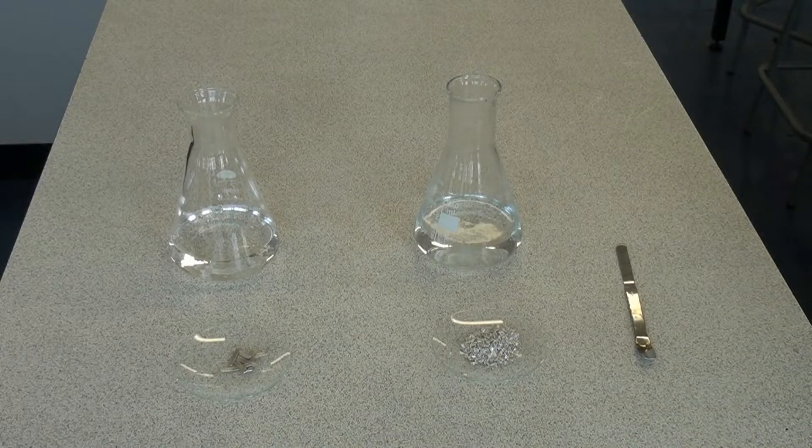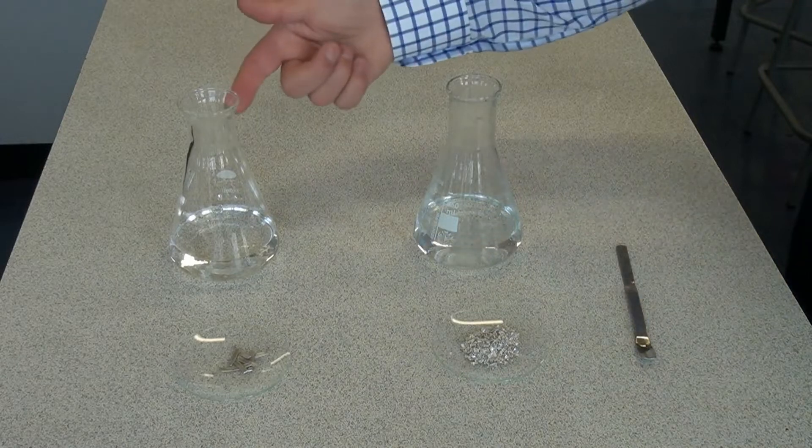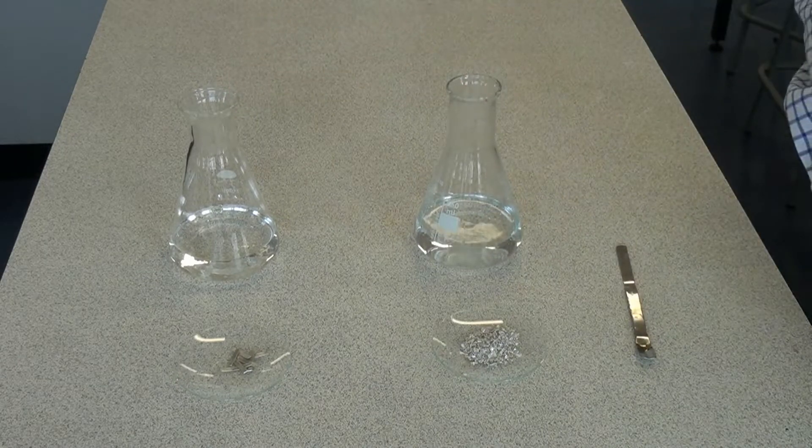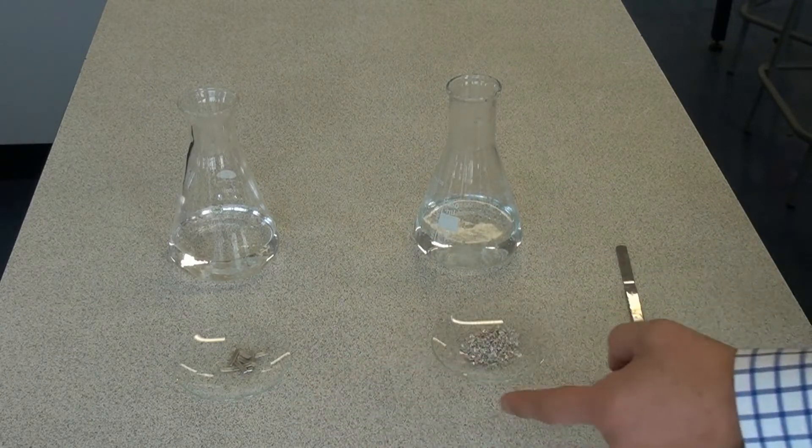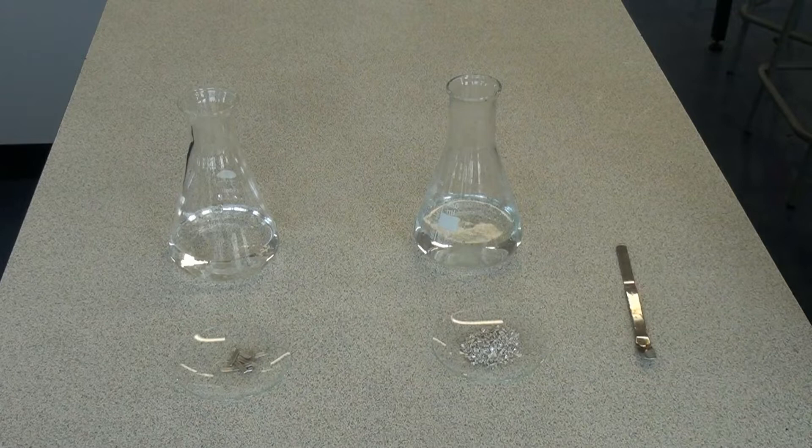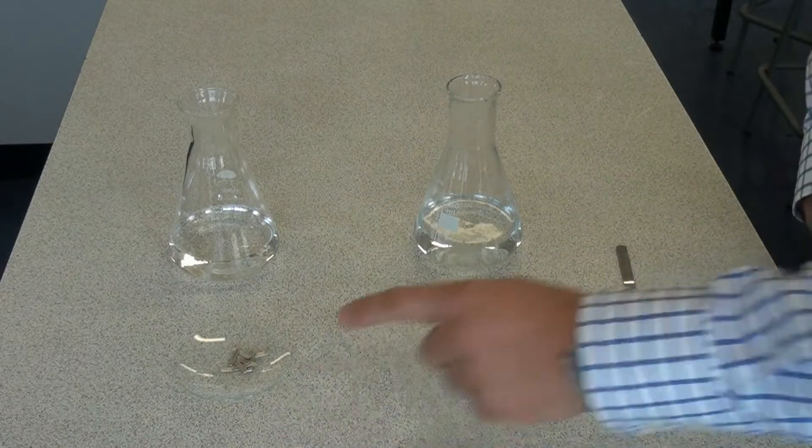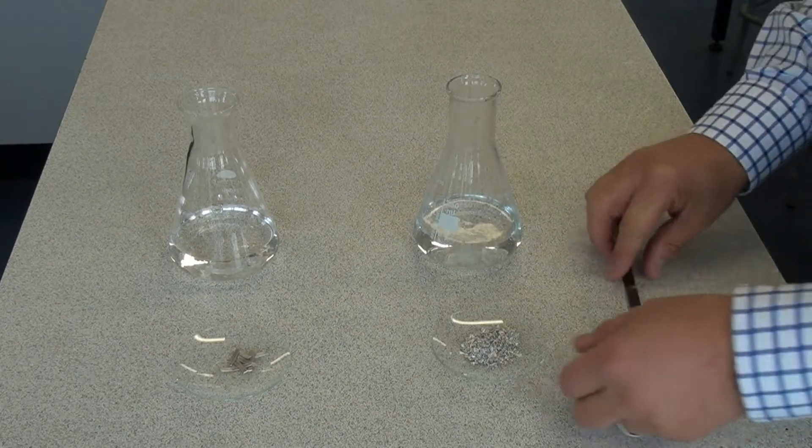So what do we mean when we talk about the rate of reaction? Let's have a look. So here I've got some hydrochloric acid in each flask, 100 cm cubed of each and it's the same concentration and here I've got two samples of magnesium. One sample is in small pieces, the other sample is much larger pieces of magnesium. So let's have a look what happens when we put them in with the acid.